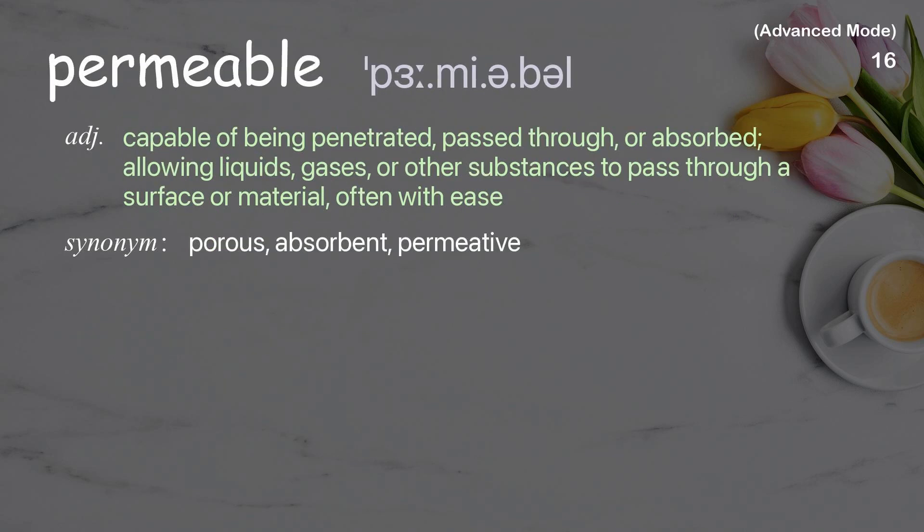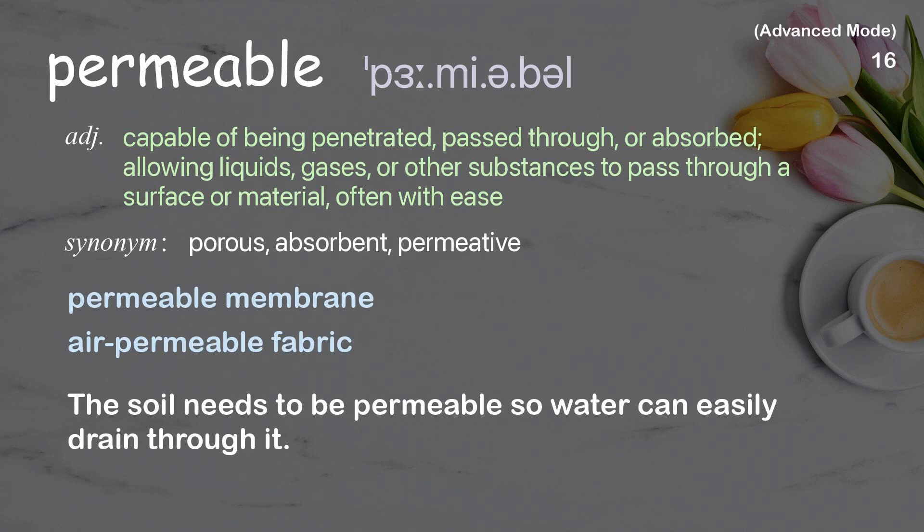Permeable: capable of being penetrated, passed through, or absorbed — allowing liquids, gases, or other substances to pass through a surface or material, often with ease. Examples: permeable membrane, air permeable fabric. The soil needs to be permeable so water can easily drain through it.